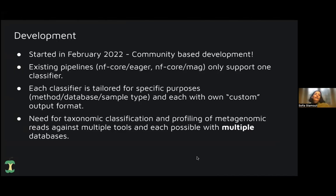The development started in February 2022 by James Fellows Yeats and Maurice Beber, and we at Karolinska Institute joined during the online hackathon in March. This is really a community-based development. There are a few NFCore pipelines, like IGER and MAG, that support some sort of taxonomic classification, but they only support one classifier, and each classifier is tailored for specific purposes and has its own custom output format. So there was really a need to have a pipeline that would support taxonomic classification and profiling of metagenomic reads against both multiple tools and multiple databases.